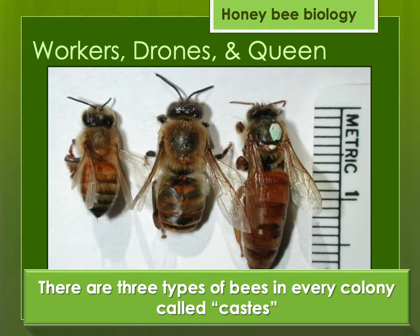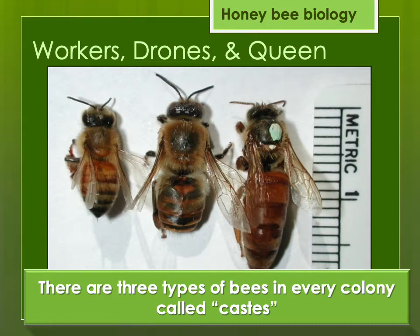Drones are the male bees. They come from an unfertilized egg — interestingly, they have a mother but they do not have a father. There's only one purpose for drones: mating with queen bees. This occurs outside the hive, usually on a warm summer day. The drones are only in the hive at certain times of year. There may only be a few hundred drones, and this is usually only in spring, summer, and early fall. At other times, when breeding doesn't happen, the drones are basically kicked out of the hive, and new ones will be raised when spring and warmer weather returns.